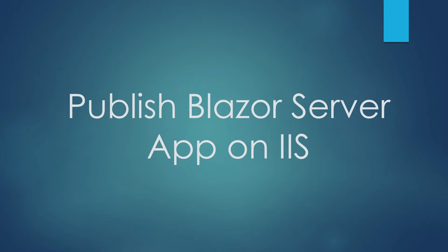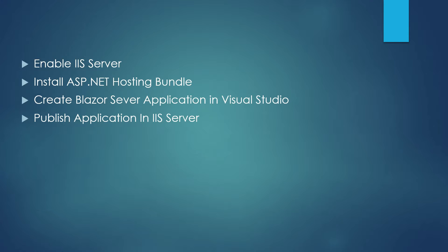In this video we will talk about how to publish a Blazor Server application on IIS server on Windows 10. We are going to follow four different steps: first, enable IIS server on Windows 10; second, install the ASP.NET Core hosting bundle required by IIS to host a Blazor application; third, create a Blazor Server application in Visual Studio 2019; and fourth, publish that application in IIS server.